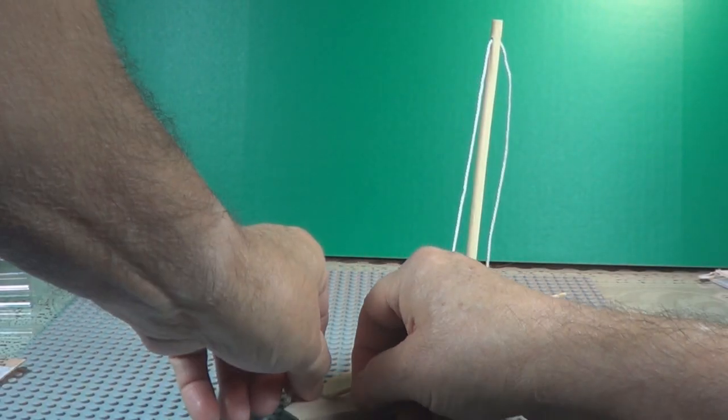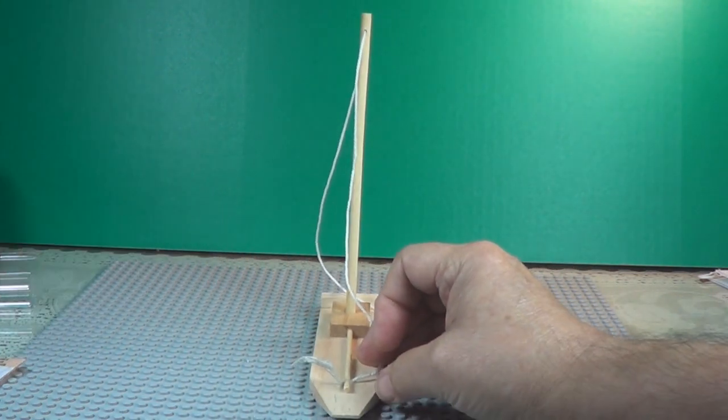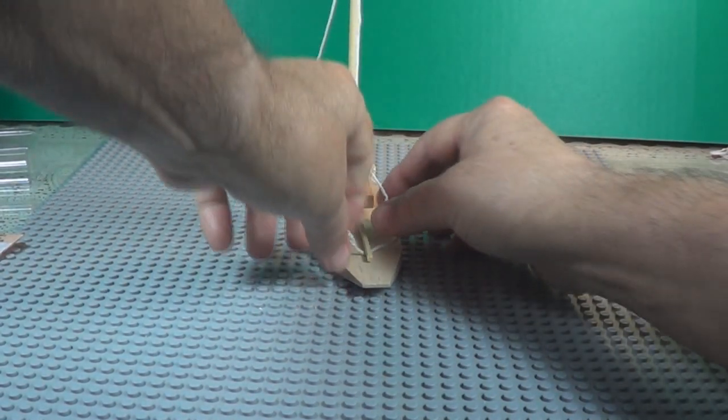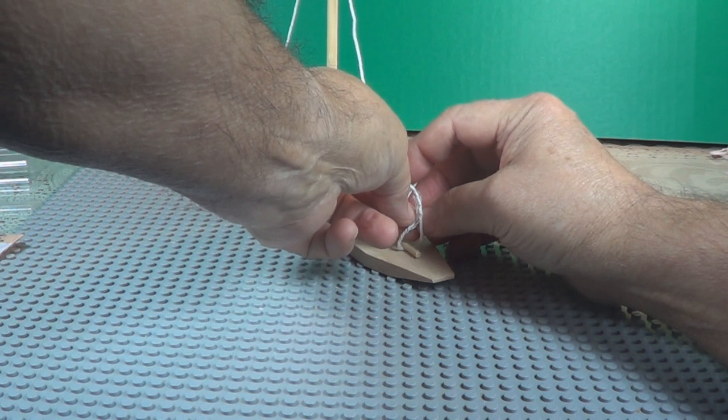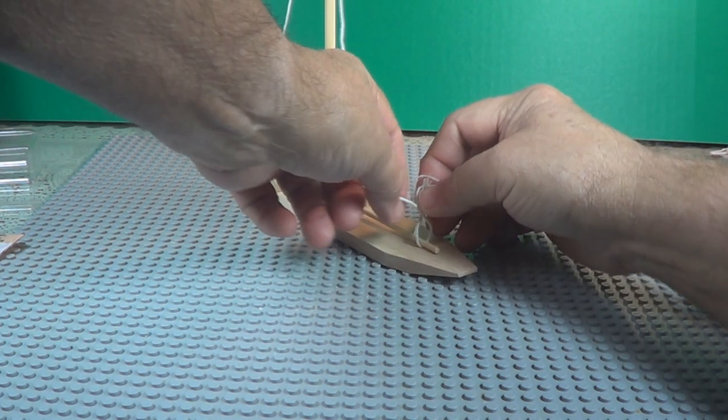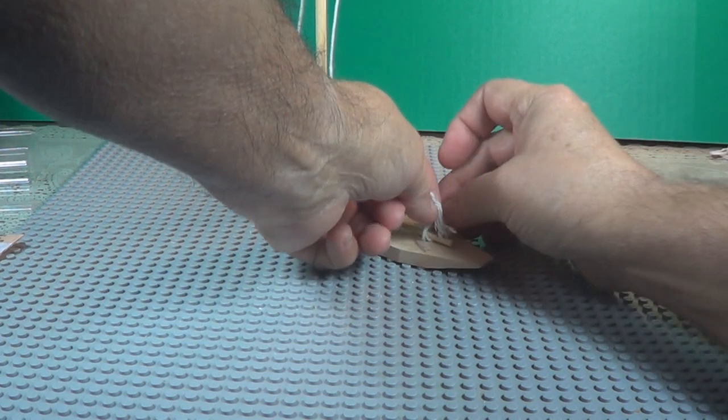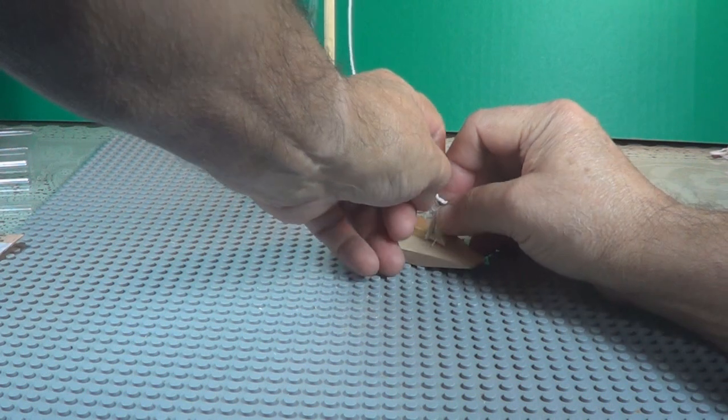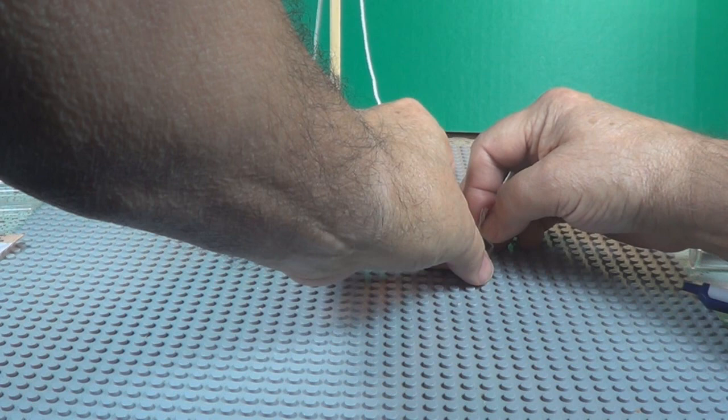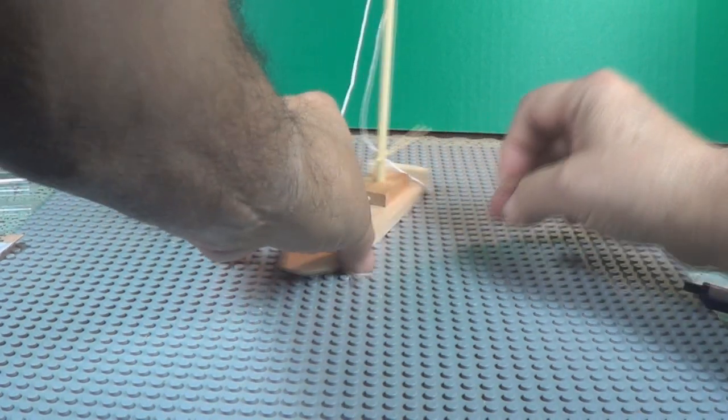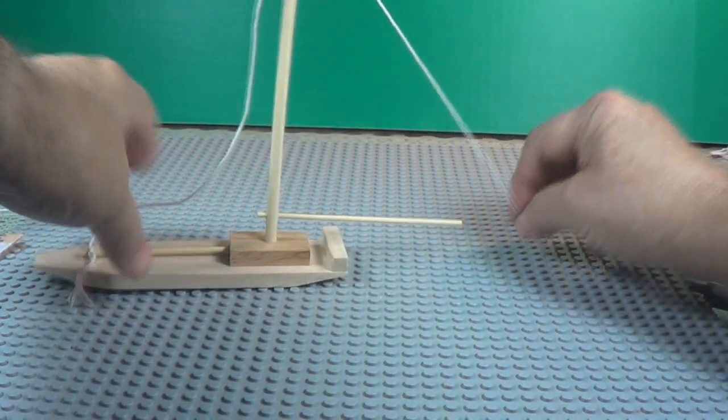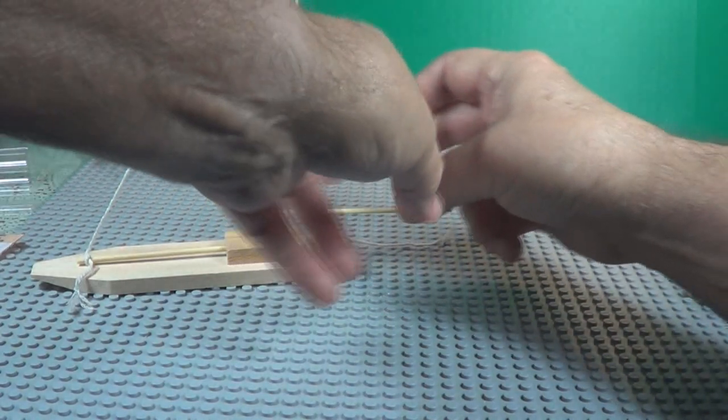Now we're going to tie it to the end of this mast piece here. Get it down there so you can see what we're doing. There you go, now toward the end tighten it. Pull it through now. You get it tightened down, there you go.